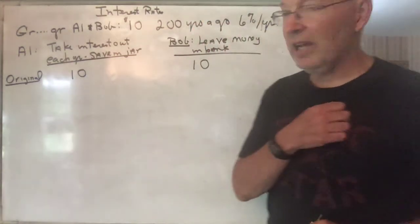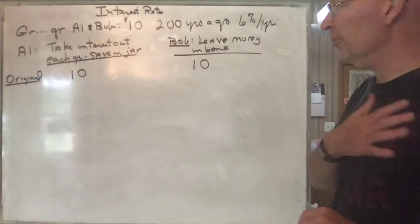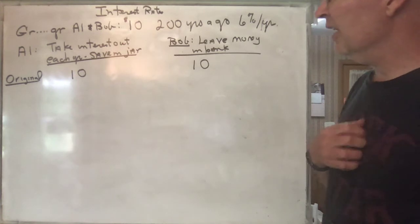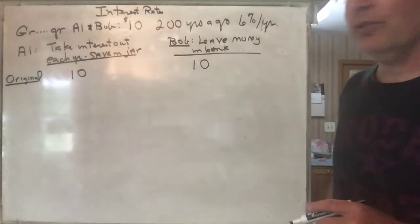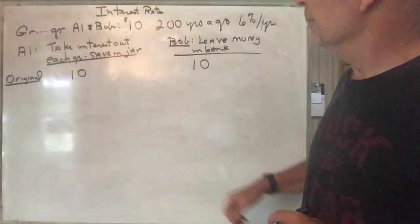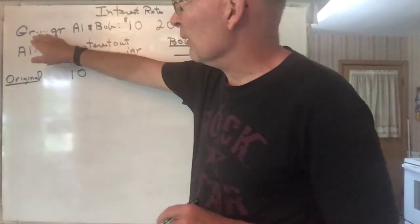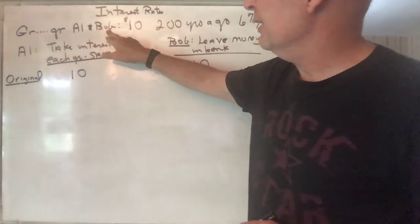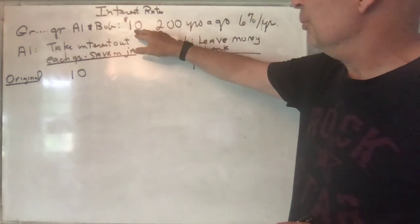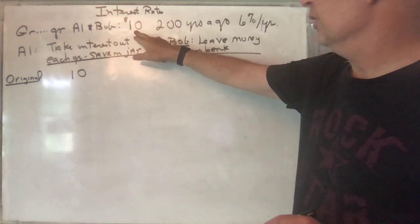Okay, I just about forgot my favorite problem about exponential growth, and the reason I like it is because it illustrates the difference between linear growth and exponential growth. So here's the problem: suppose you had a couple of great-great-great-great-great-great grandfathers, call them Al and Bob, A and B, who 200 years ago they each put $10 in a bank for you.